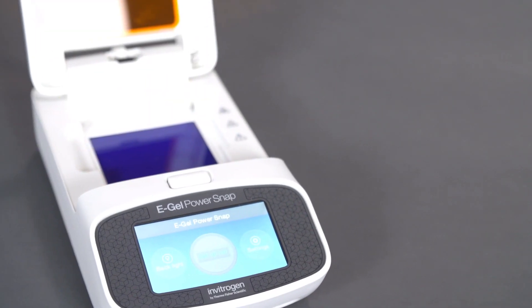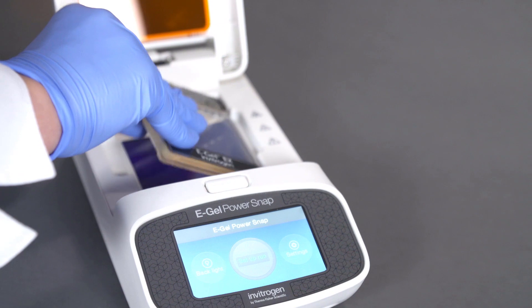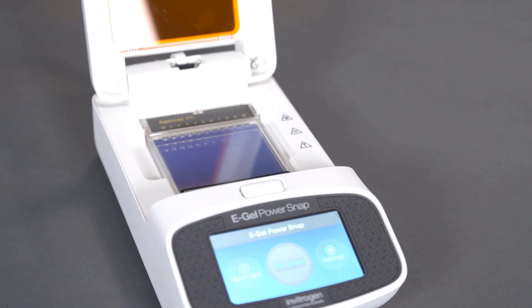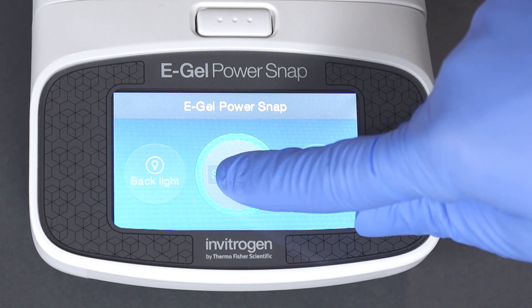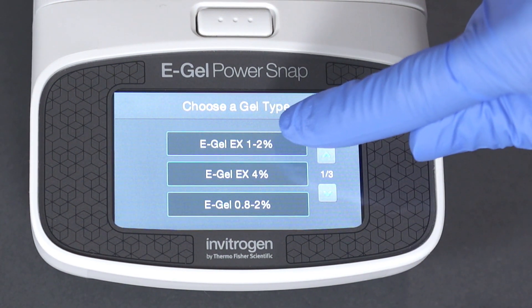To start a run, simply load a cassette and select a run program. Preset programs are available for various gel types or you can manually set your own run time.